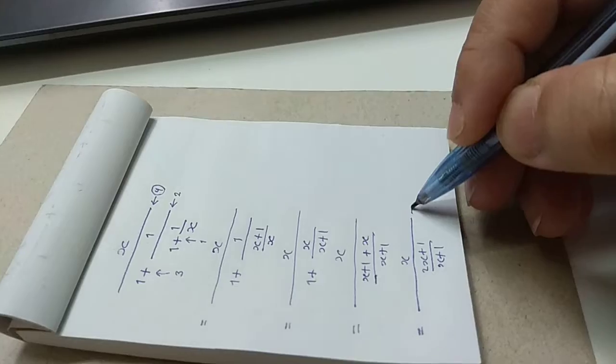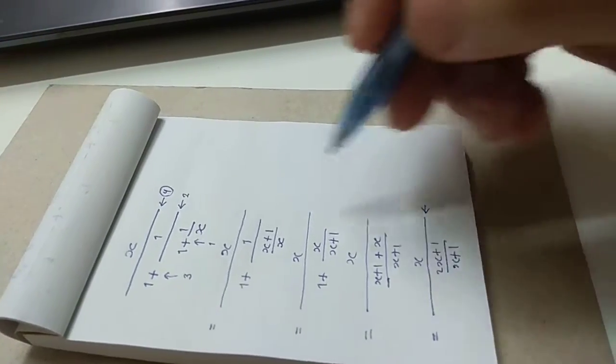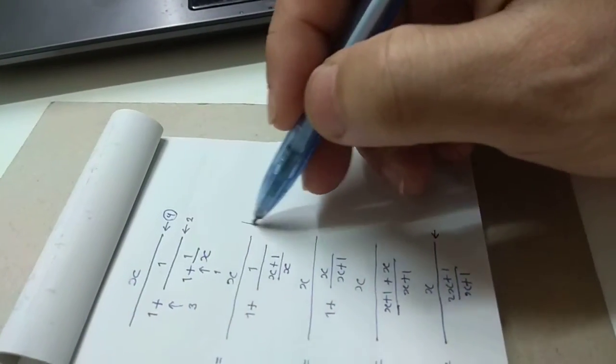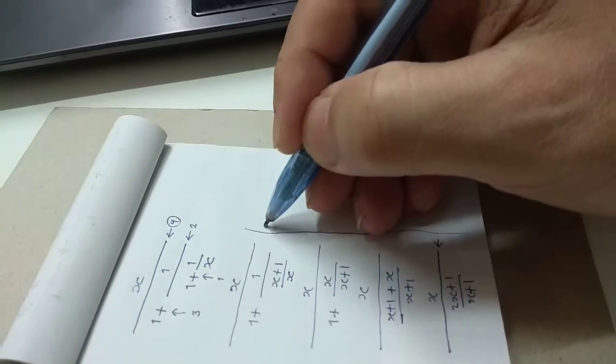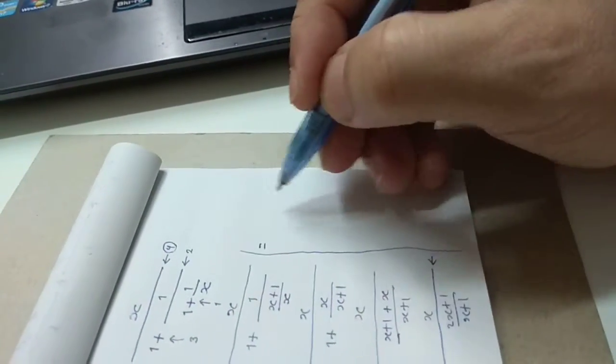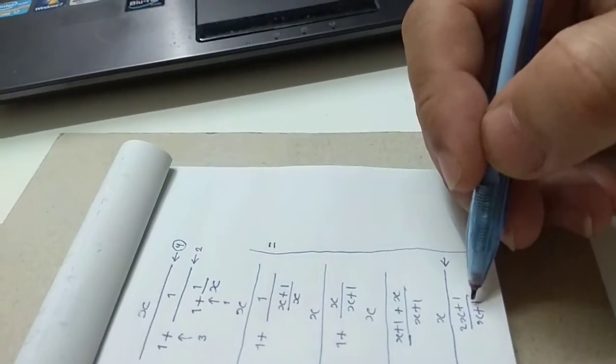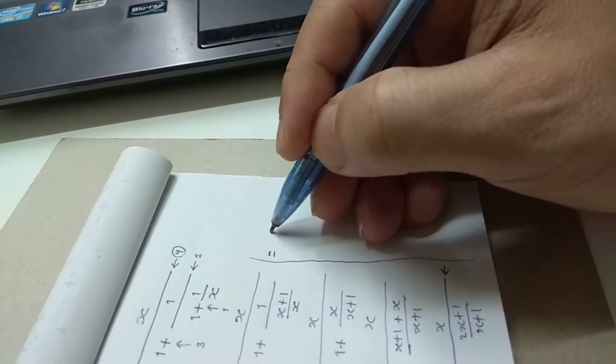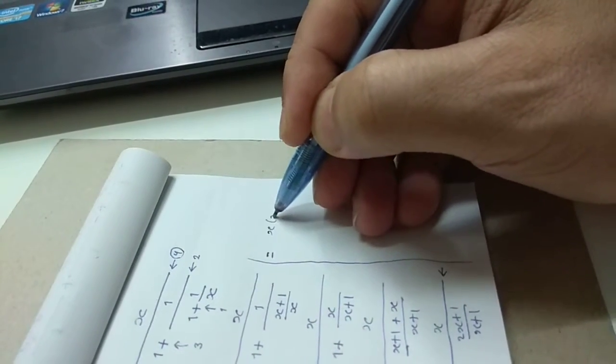Now, you divide x by this fraction. So, x divided by this is x multiplied by, yeah, make it upside down.